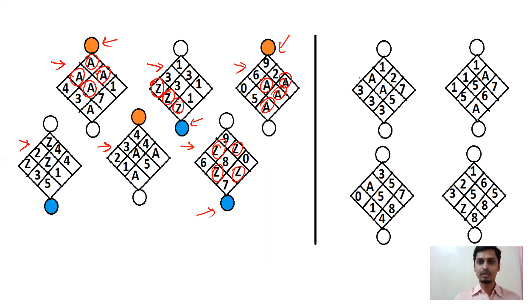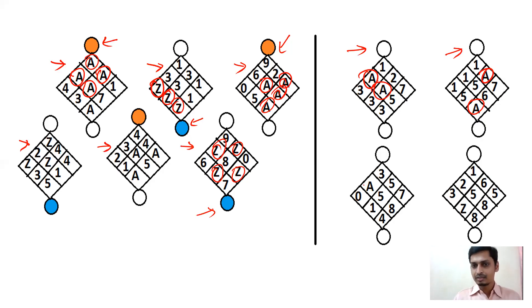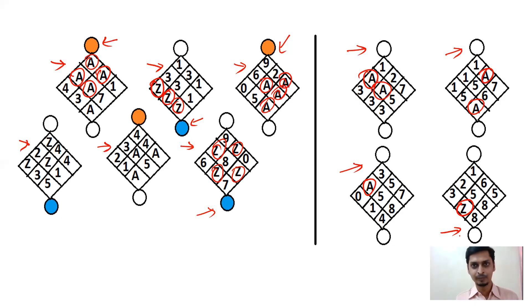The same structure is followed in the answer section. If you have A in the box, click the top circle and you get orange automatically. For the second and third boxes which also have A, click the top circle for orange. For the fourth box which has Z, click the bottom circle and it will be colored with blue.